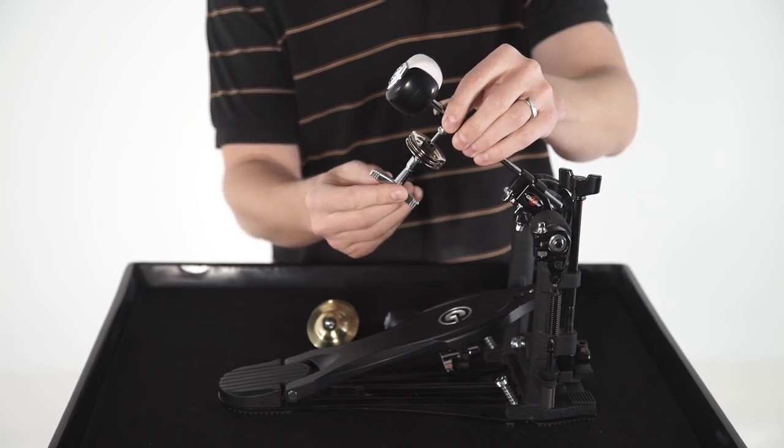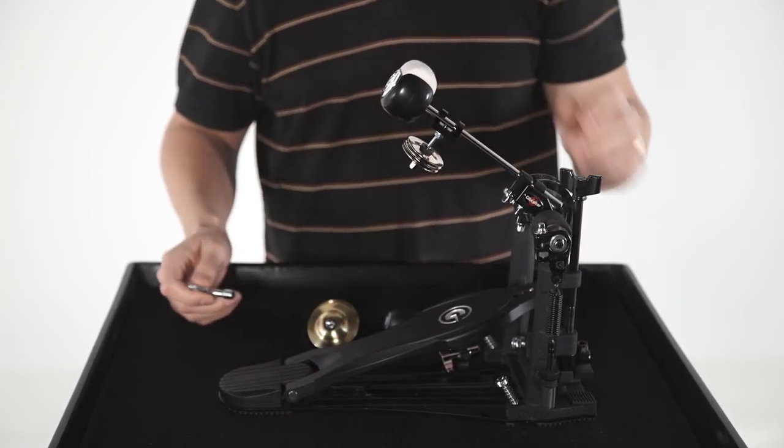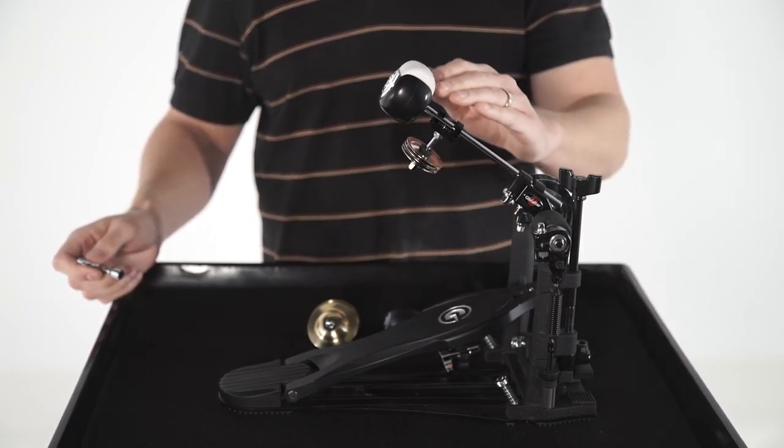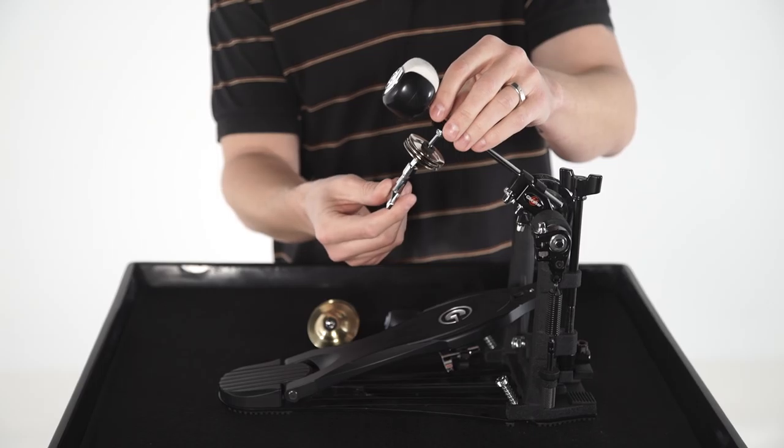That's very easy to attach to the beater shaft. Just hook and twist. We have a hook and twist situation here. Once you position the accessory on the shaft where you want it, you can lock it down with a drum key.